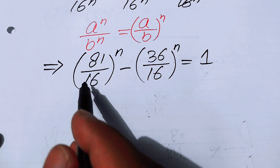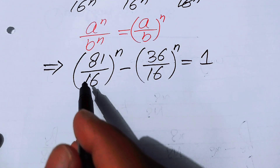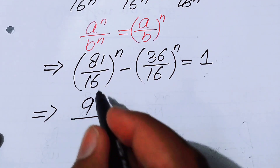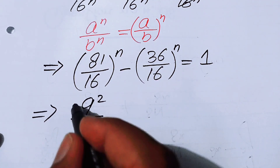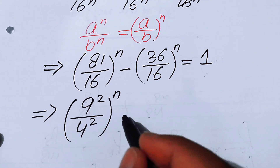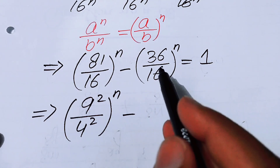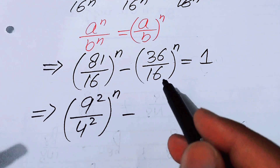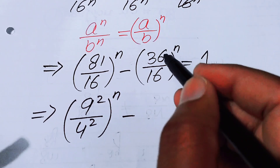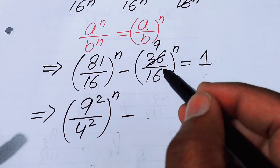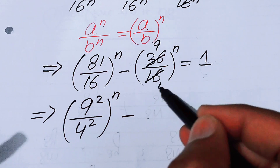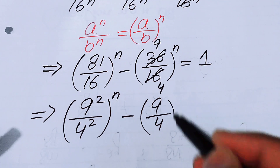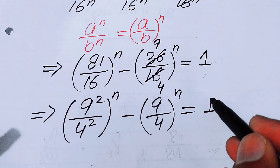Now we simplify the terms. We can write 81 as 9 squared and 16 as 4 squared. For 36 over 16, we cancel common factors of 4 to get 9/4. So we obtain (9²/4²)^n minus (9/4)^n equals 1.